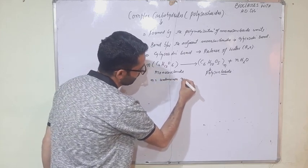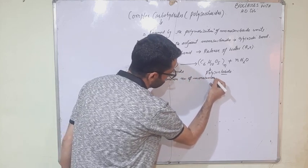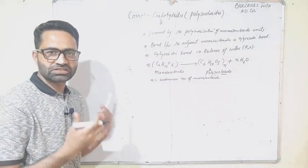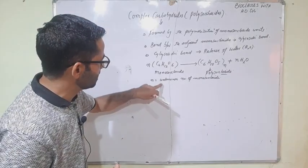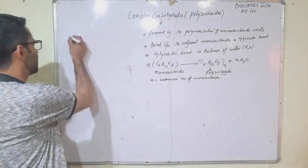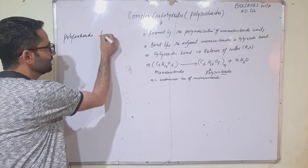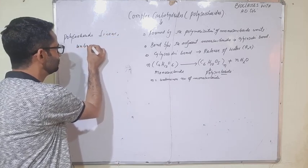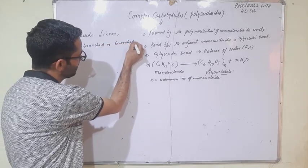This N is an unknown number of monosaccharides — it can be thousands, ten thousand, six thousand, or more than six thousand. So we simply say that N is an unknown number of monosaccharide units. These polysaccharides can be linear or branched.